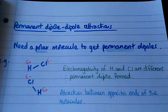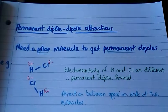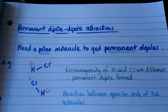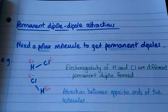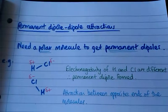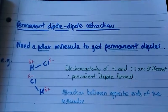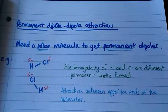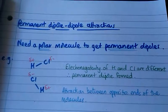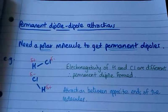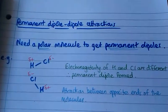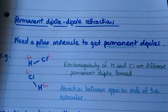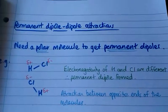If we take HCl as our polar molecule, because the electronegativities of hydrogen and chlorine are different, we get a permanent dipole forming in the molecule.